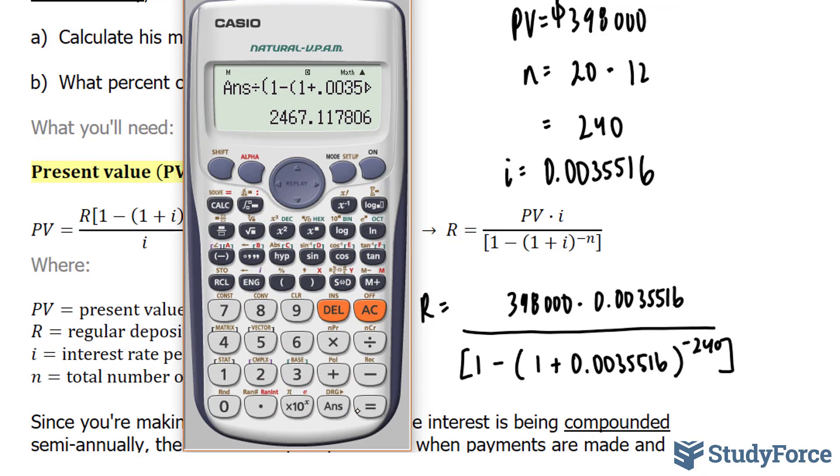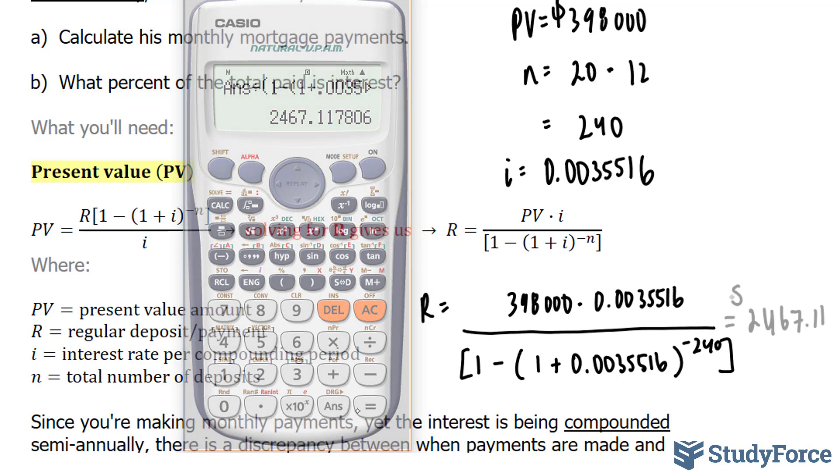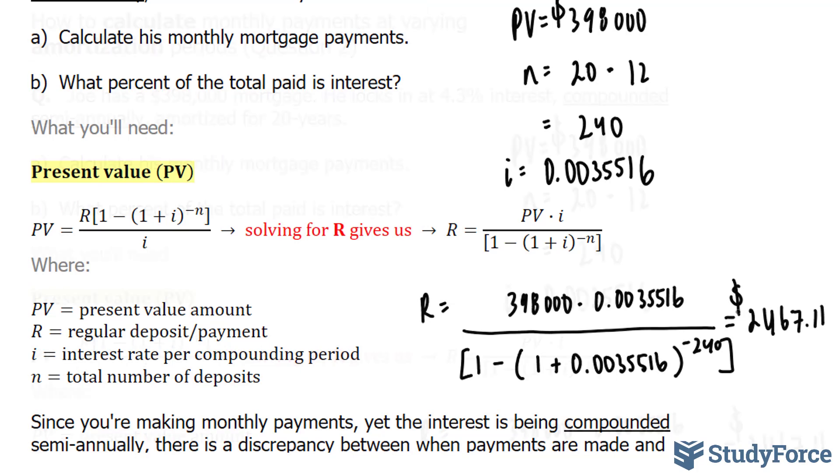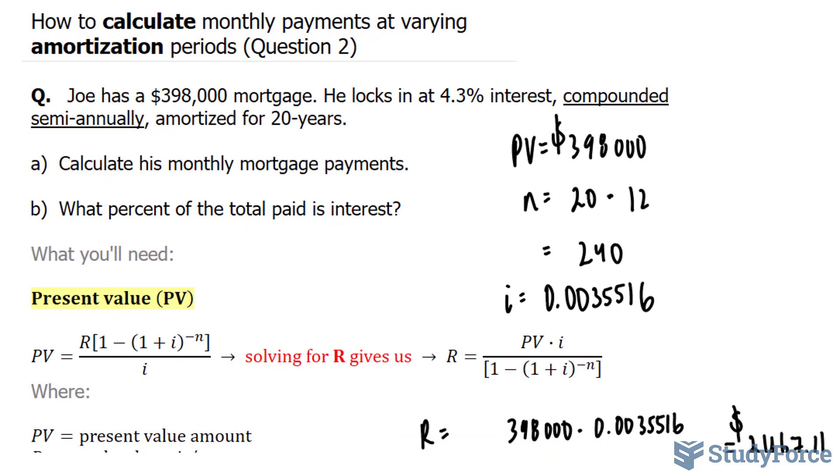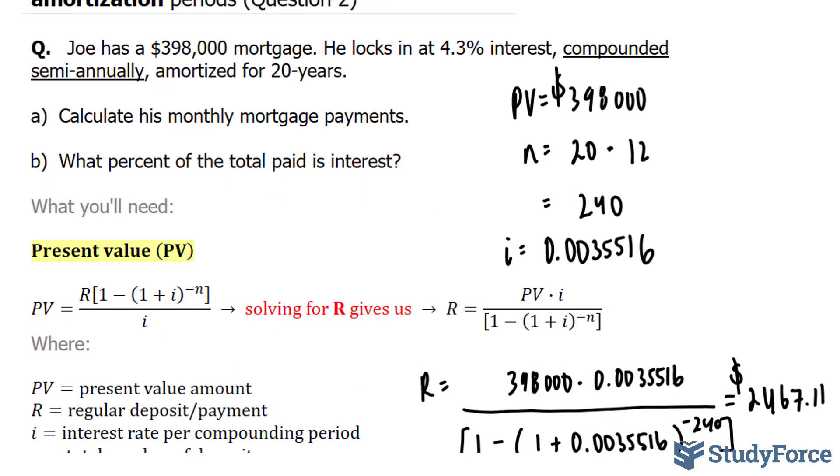And we end up with 2,467.11. What does this number mean for Joe? This means that Joe will have to pay on a regular basis for the next 240 months, $2,467.11 to pay off the $398,000 mortgage he took today.